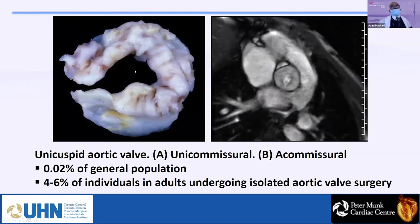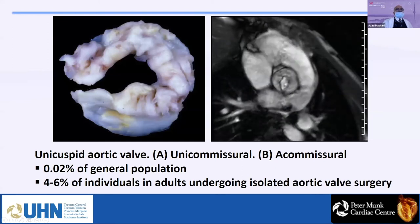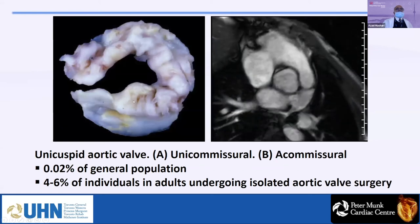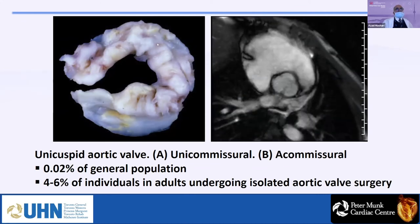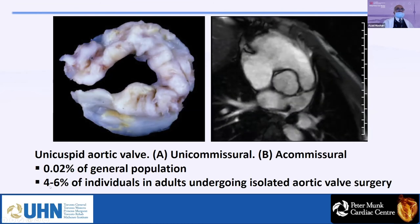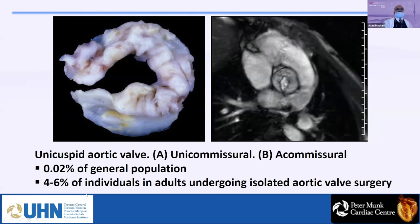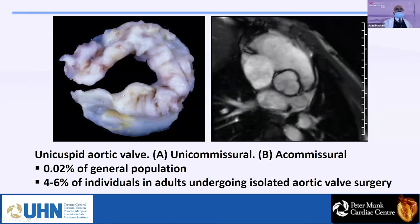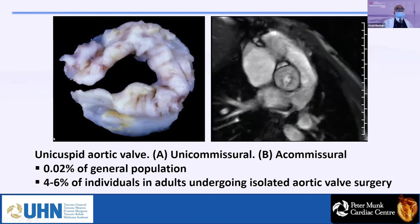How common is unicuspid aortic valve? It is not very common in adults — about 2 in 10,000 in the general population. The unicommissural form, which has one commissure, does present in adults, whereas the acommissural form (no commissure) typically causes severe AS in infancy. Among patients going for aortic valve replacement, unicommissural aortic valve accounts for about 4–6% of cases. It is most commonly associated with AS and aortic dilatation, and some cases present with aortic dissection.